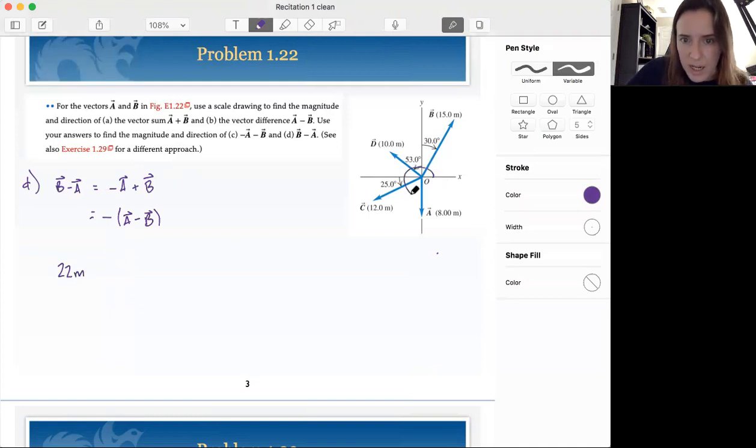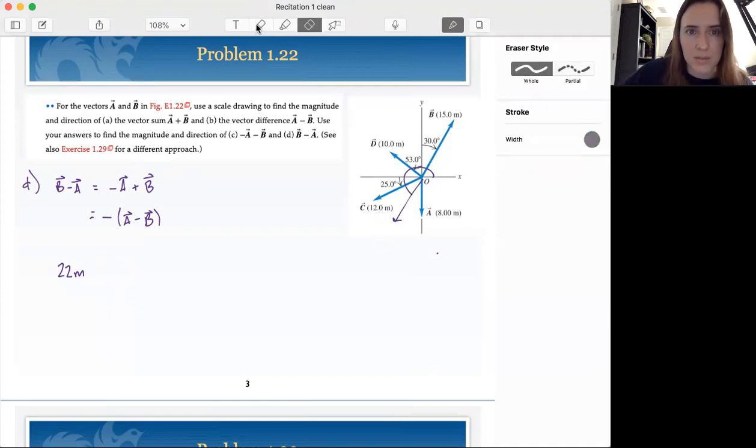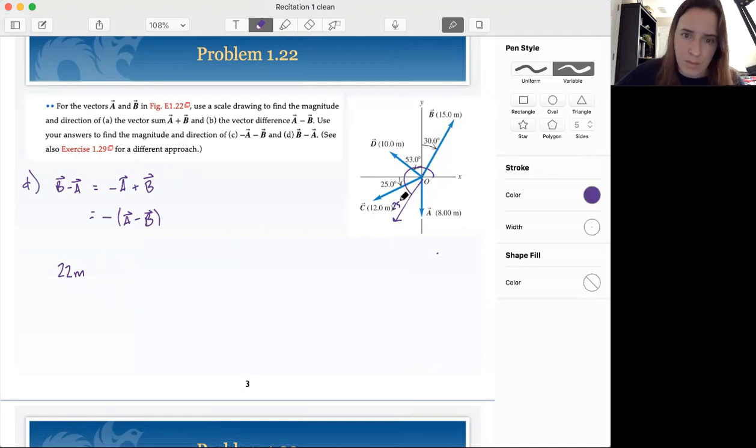But instead of being at an angle of 250 degrees, we're going to be up here in the opposite direction. So minus 180 from that. So that's going to be at 70 degrees from the positive x-axis.